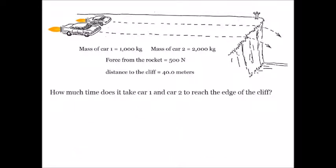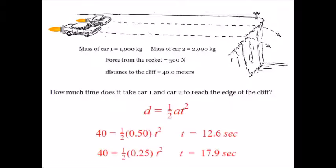Question two: How much time does it take for the car to reach the edge of the cliff? Using the second kinematic equation, d equals one-half AT squared, and working through the math, taking a square root, the larger car spends a longer amount of time before reaching the edge of the cliff: 17.9 seconds.